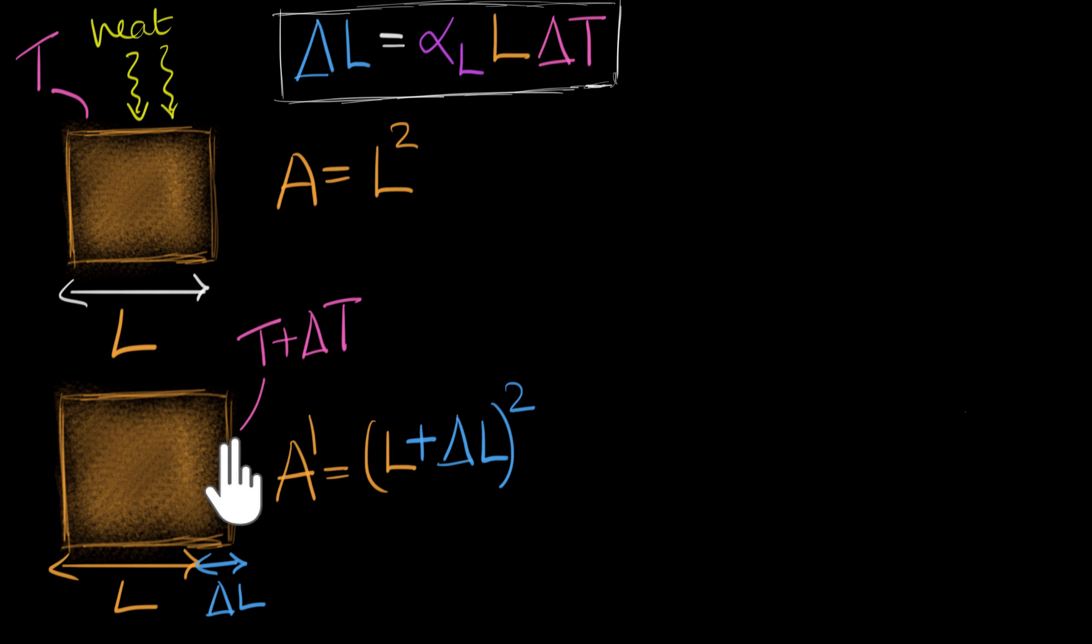And now to calculate the change in the length, we just have to subtract these two. So the change in the area, we'll write that over here. That's going to be the final area, which is over here, L plus delta L, plus delta L, the whole squared, minus the initial area. And that is just L squared. And at this point, I want you to pause the video and see where the algebra takes you. Just go with the flow and see if you can do something. Just see what expression you end up with.